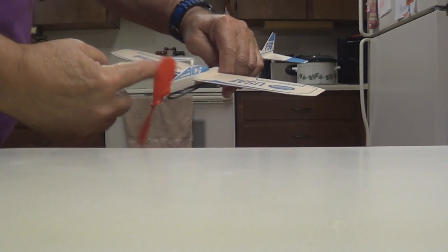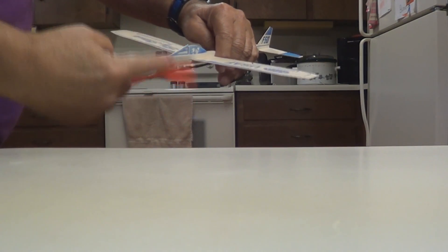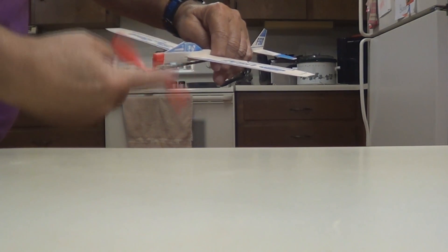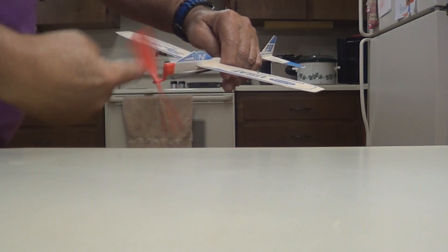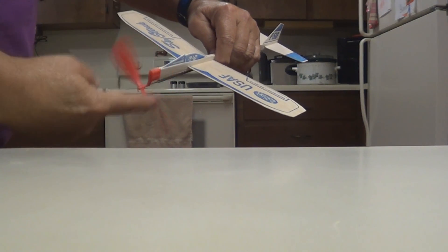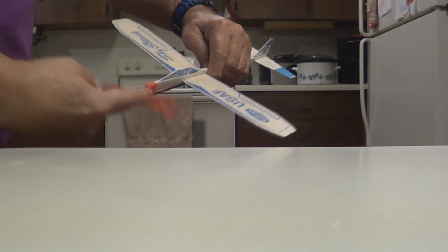To wind up your propeller counterclockwise, just like this, wind it up until you get the rubber band tight and it'll be ready to fly when you let it go. You'll see how it does.